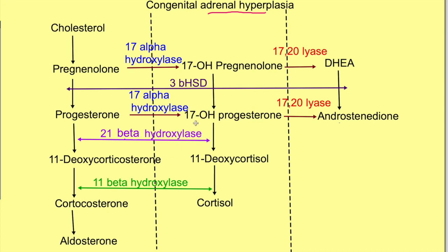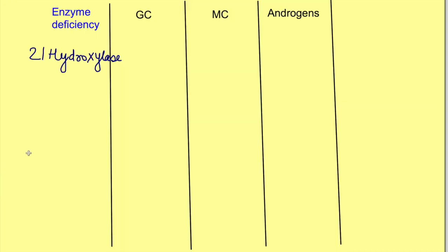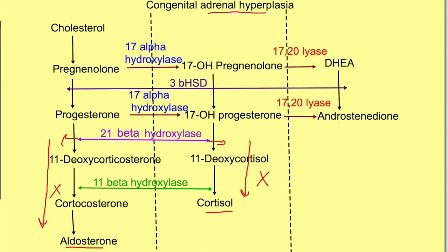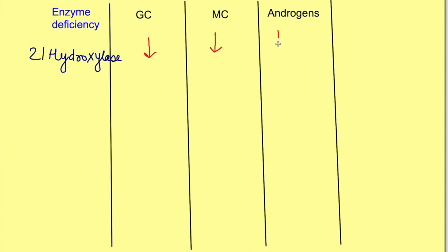21-beta hydroxylase is required both for the synthesis of mineralocorticoids as well as glucocorticoids. These forward reactions will not be able to proceed, so deficiency will cause decrease in glucocorticoids as well as decrease in mineralocorticoids. In addition, the back products accumulate and will be diverted to synthesis of adrenal androgens because the other two pathways are blocked. Hence there will be an increase in adrenal androgens.